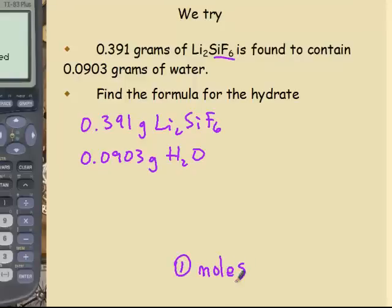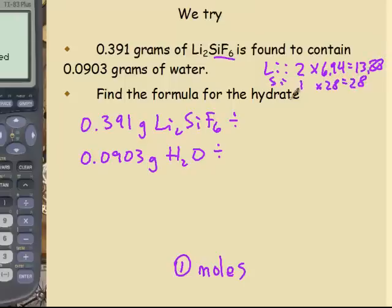The difference between this and an empirical formula is when I divide these by their molar masses to get moles, I can't just look at the periodic table because I have two lithiums, one silicon, and six fluorines. So I have two times the mass of lithium, 6.94, equals 13.88. One silicon, 28. And then six times 19 for fluorine, 114. So 155.8 is the molar mass of lithium hexafluorosilicate.